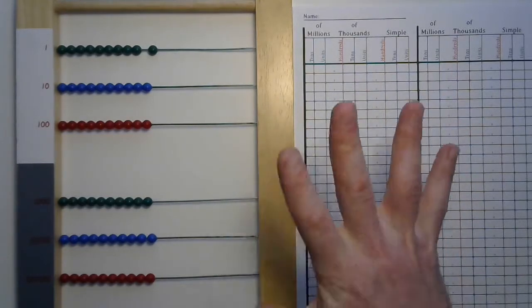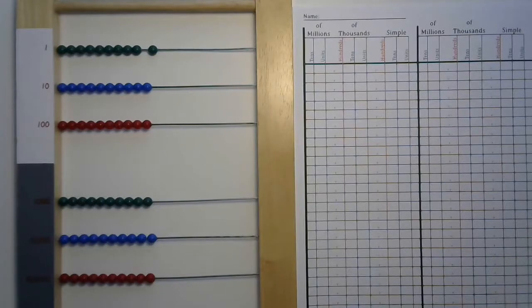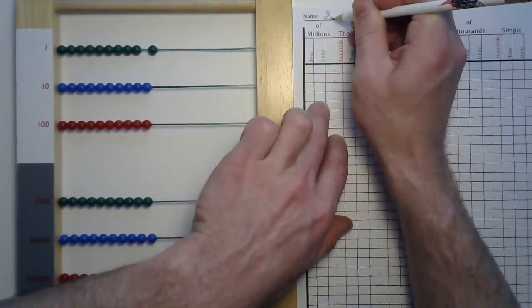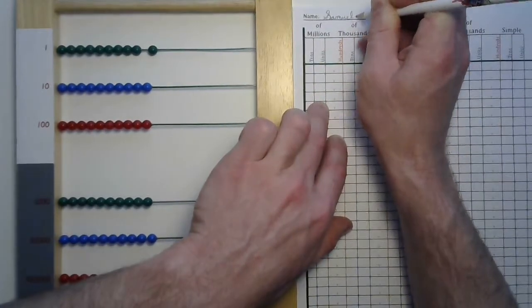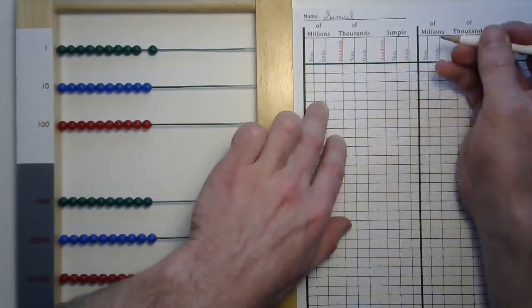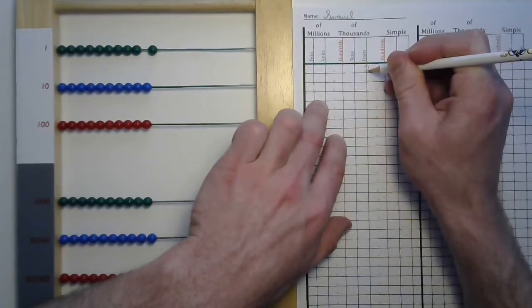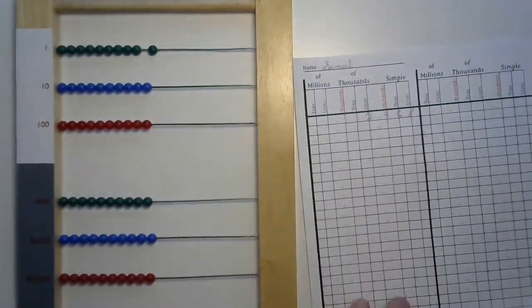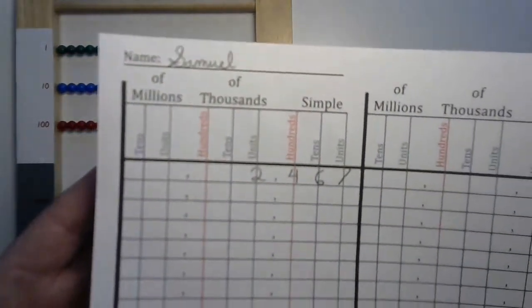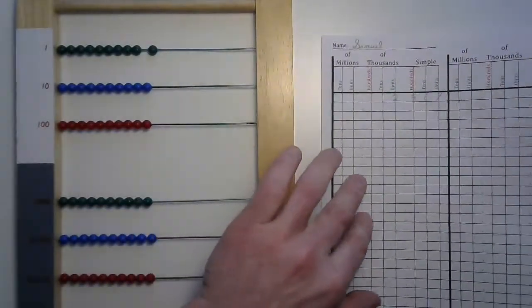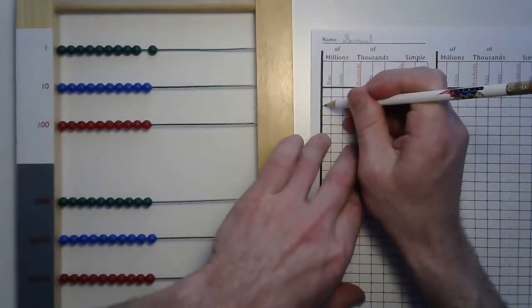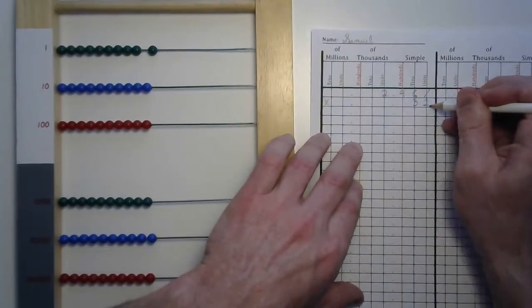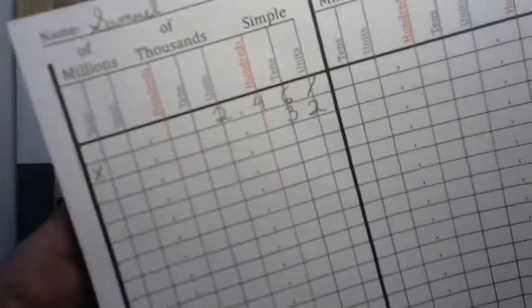How about 2461 times 32? Well, first, I'm going to write my name on my paper. All right, and then the multiplicand 2461, making sure to put everything in the right place, and then putting the multiplier below that. And the same thing, aligning the numbers 30 and 2 just below that.